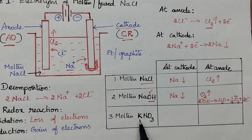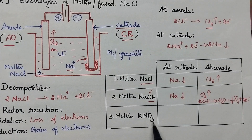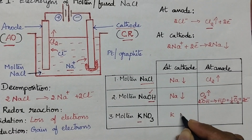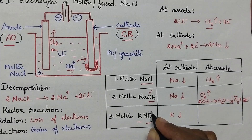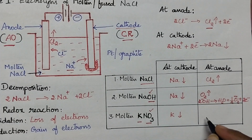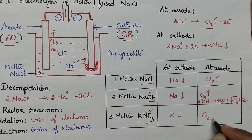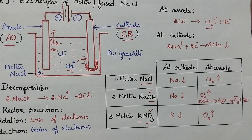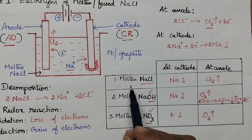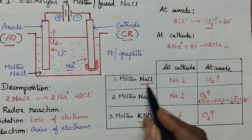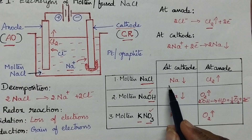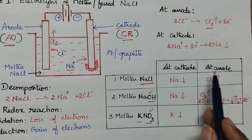Let us apply the same principles to the electrolysis of molten potassium nitrate solution. Here the metal is potassium, so at the cathode the potassium metal will be deposited. Here the anion is nitrate, which also contains oxygen as an atom, and hence oxygen gas will be liberated at the anode. In this way, during the electrolysis of any molten electrolytic solution, simply by seeing the electrolyte we can predict what are the products formed at the cathode and at the anode.